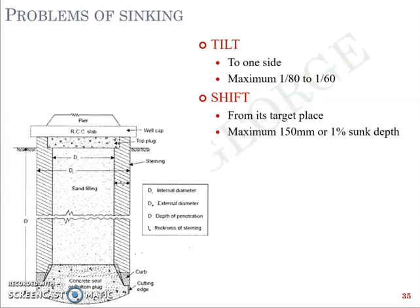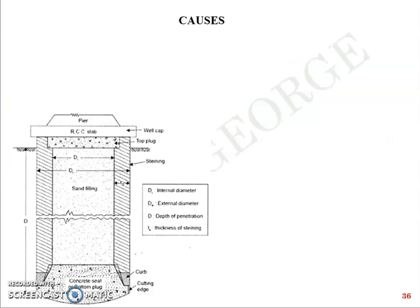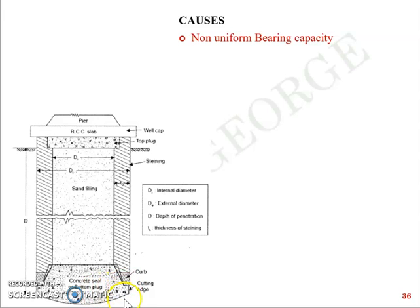These are briefly the problems of sinking. The causes that could lead to tilt and shift include non-uniform bearing capacity of soil. Since a well is a structure with a diameter of say 5, 10, or 15 meters, the soil beneath the bottom plug may not have uniform bearing capacity across its entire area. So there is a chance the well may get tilted due to this non-uniform bearing capacity.